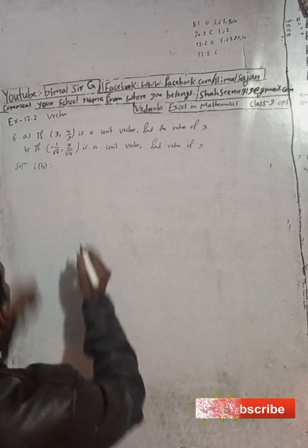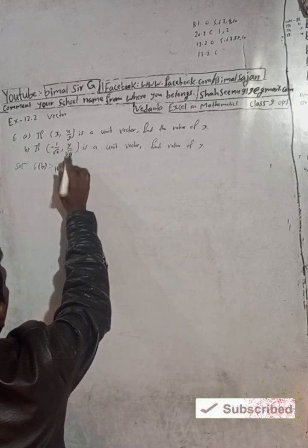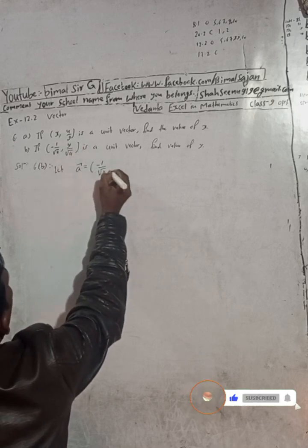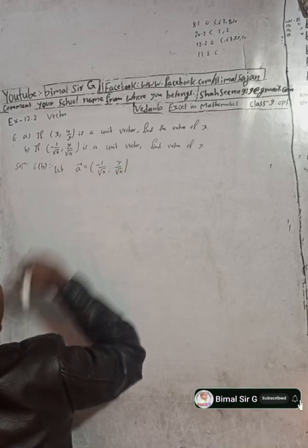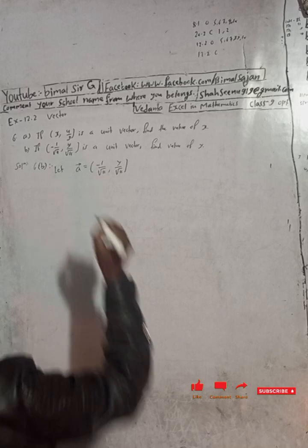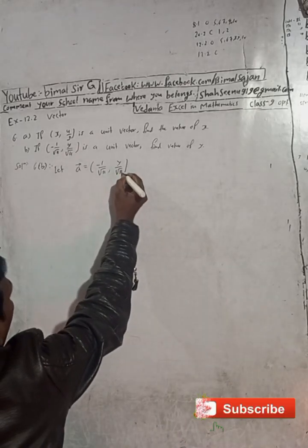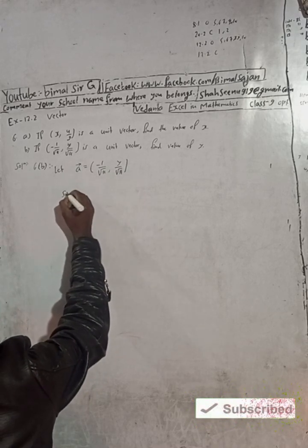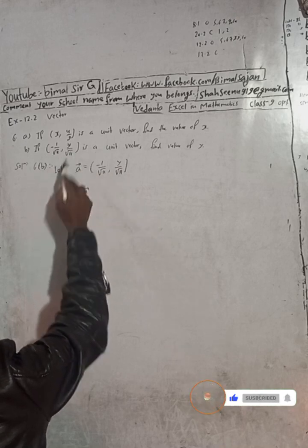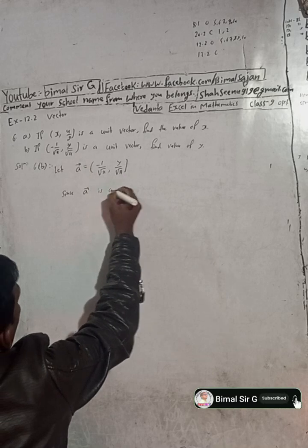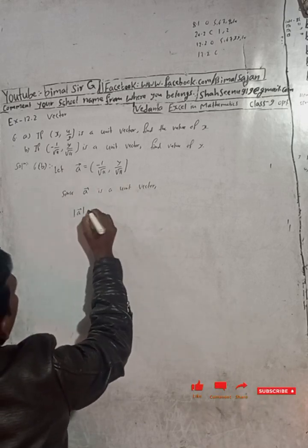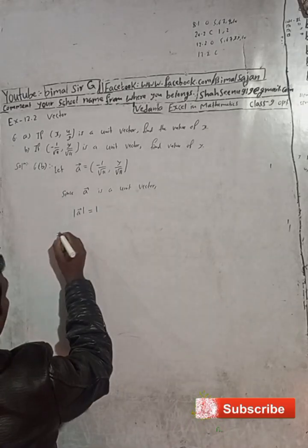Let A vector be equal to (-1/√11, y/√11). Since A vector is a unit vector, the magnitude of A vector equals 1.